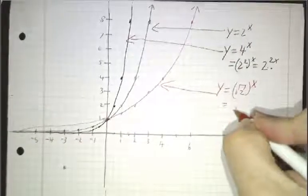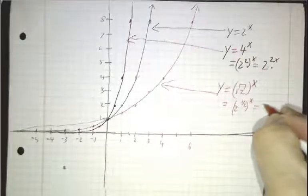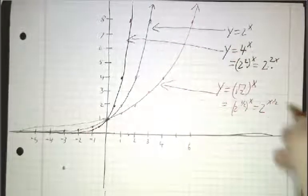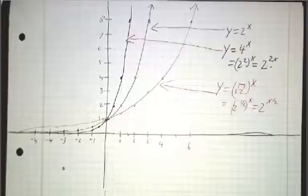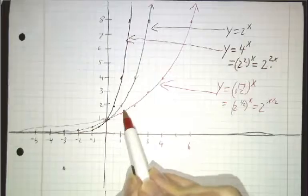And that's because the square root of 2 is 2 to the 1 half, we take that to the x power, and that's 2 to the x over 2. So, all exponential functions look more or less the same, just some of them go faster than others.